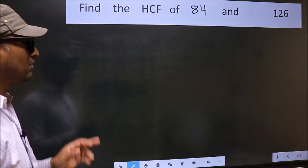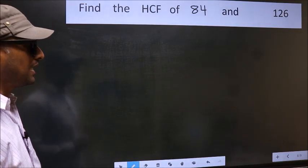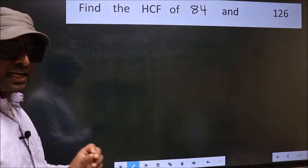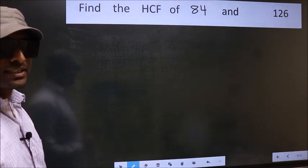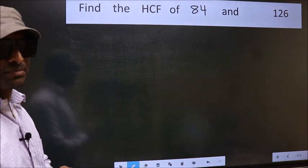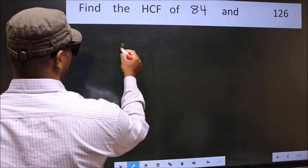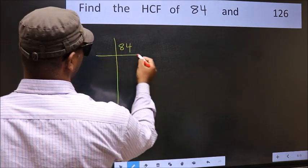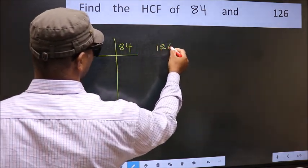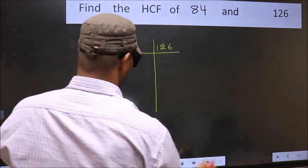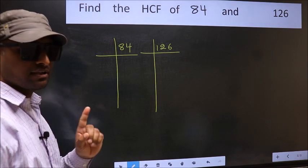Find the HCF of 84 and 126. To find the HCF, we should do the prime factorization of each number separately. What I mean is 84 and 126. This is your step 1.